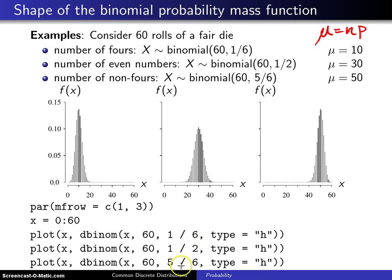This type equals quote h quote means that the plot will be histogram style—that is, spikes will be done. Here are the three plots.